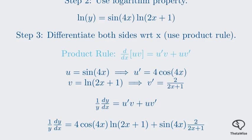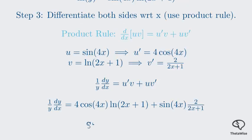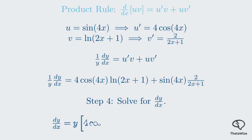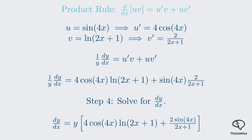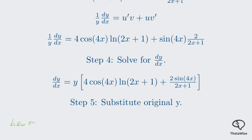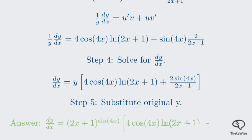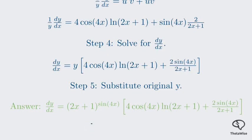The last step is to solve for dy/dx. We multiply both sides by y, then substitute back the original expression for y, which was 2x plus 1 to the sin 4x. Our final answer, highlighted in green, is 2x plus 1 to the sin 4x, multiplied by the quantity 4 cos 4x times ln of 2x plus 1, plus sin 4x times 2 over 2x plus 1. The memo's answer matches ours perfectly, so our solution is verified.